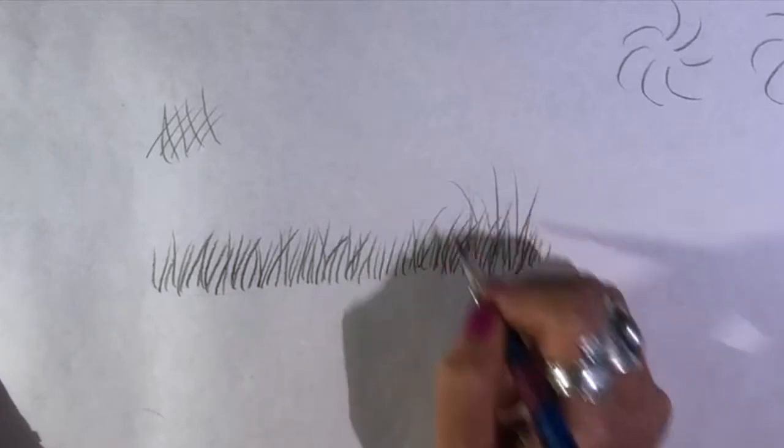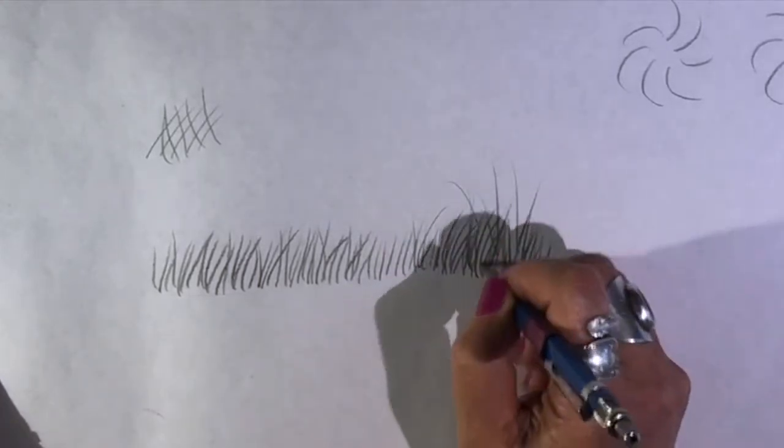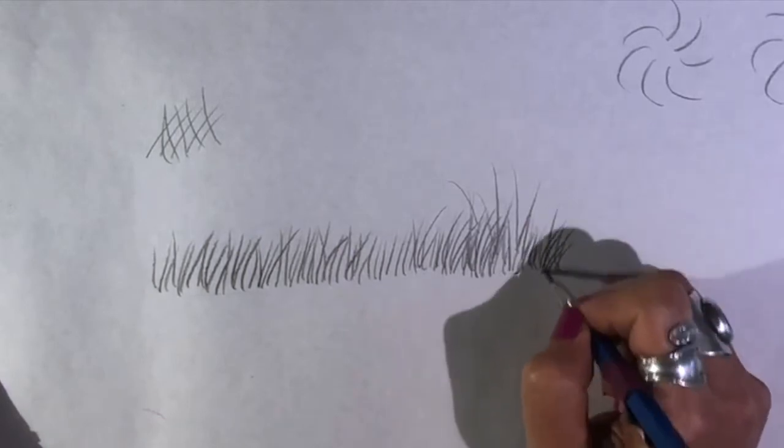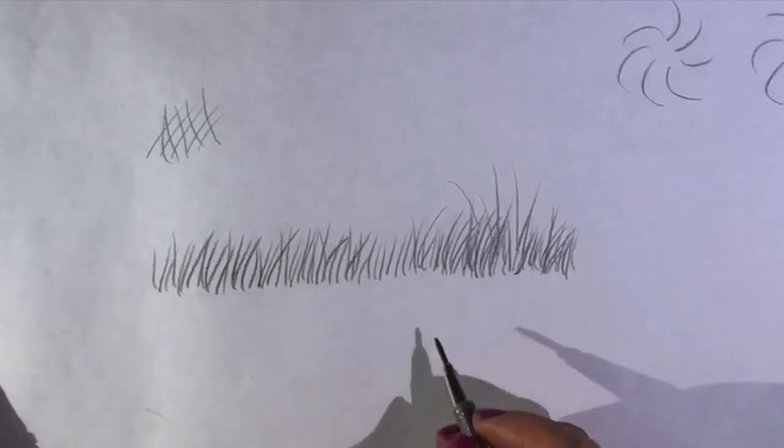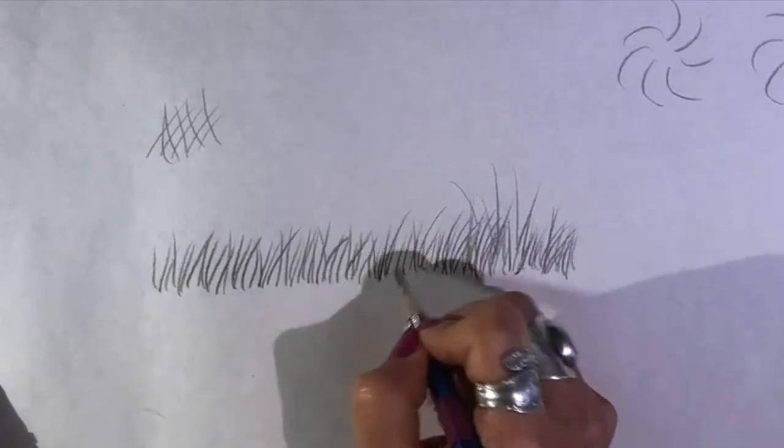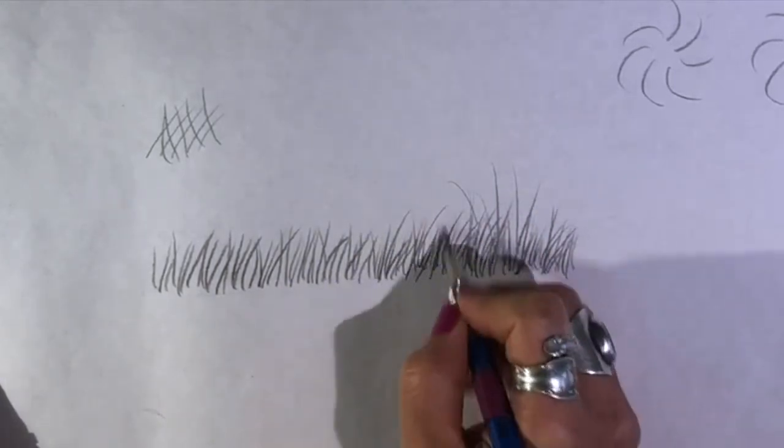You can do shorter pieces and longer pieces if you want. It gives an illusion of some deeper grass. You can continue your line. So that's about six inches. You can see that in here there probably needs to be a few more pieces just to make it look a little bit thicker.